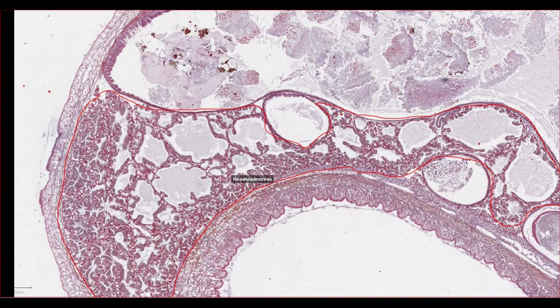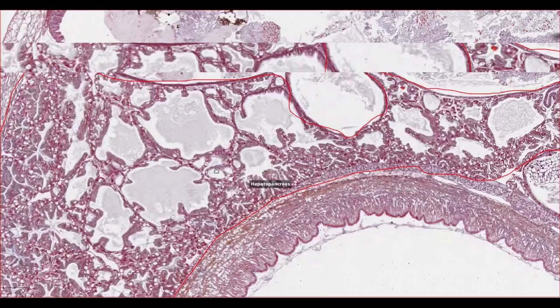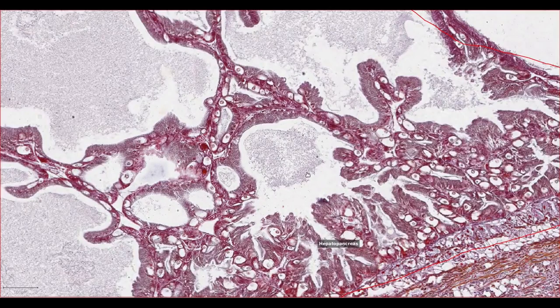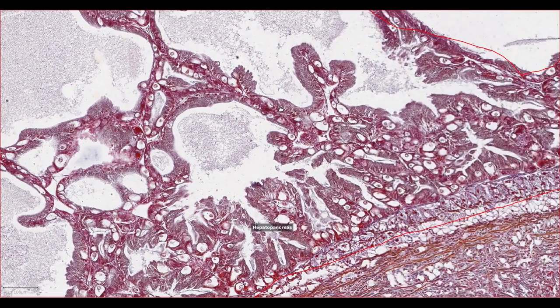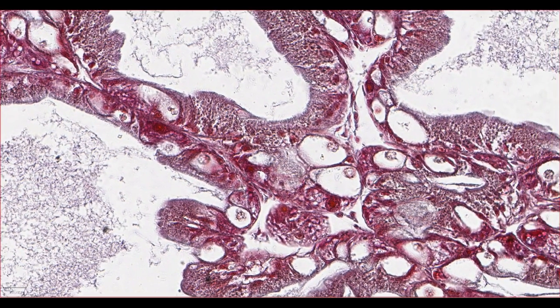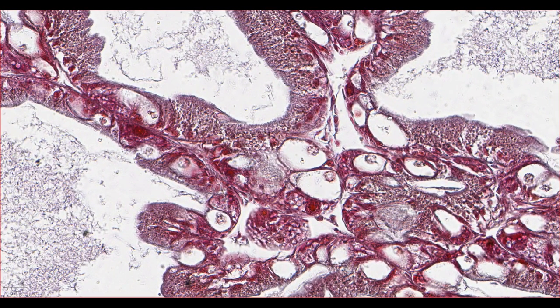Next to the intestinal tract, there's another large organ with lots of smaller lumens. This is the hepatopancreas. We saw in another video that arachnids also have an organ called a hepatopancreas, which looks quite similar in that there are lots of large cells with a very granular cytoplasm, like these ones here. While the hepatopancreas in snails also has a role in digestion, I doubt that these organs are completely analogous, since arachnids and snails are so distantly related.